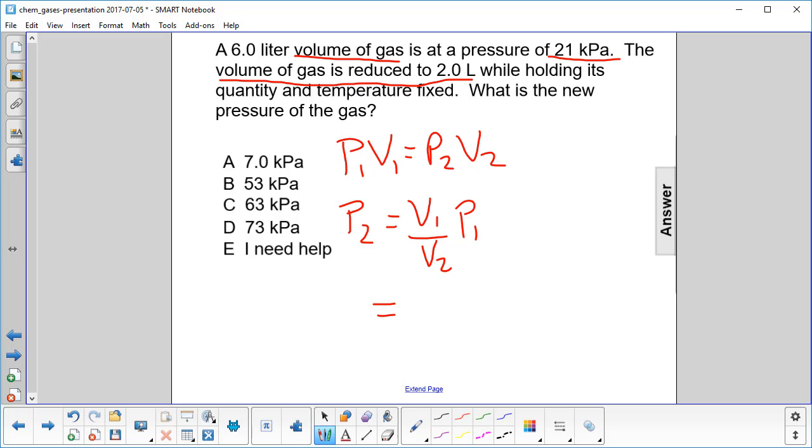I think we can plug the numbers in now. V1 is 6 liters. V2 is 2. And the liters will cancel, so I'm not even going to write them. And the original pressure is 21 kilopascals.